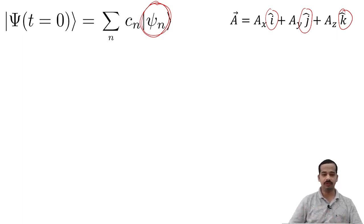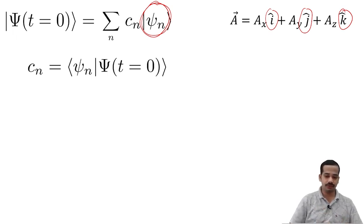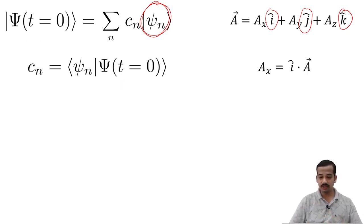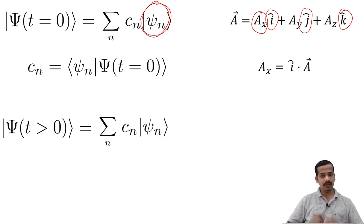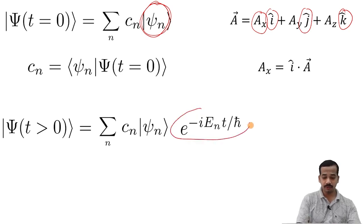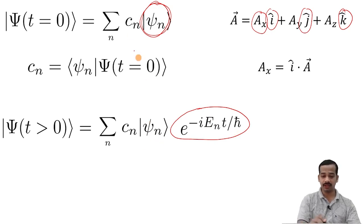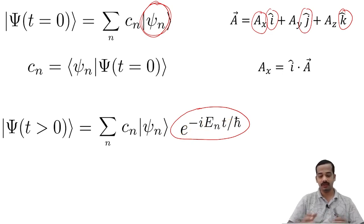Once we expand the initial state in terms of energy eigenstates, the next step is to find C-n, the coefficients. To find this coefficient, you have to take the inner product between psi-n and the state at t equal to 0. This process is similar to finding the A-x component of a vector by taking the dot product with the respective unit vector. The state at time t greater than 0 can then be obtained by plugging in the respective exponential time-dependent factor e to the power minus i E-n t over h-bar for each psi-n in the summation. That is the time-evolved state.